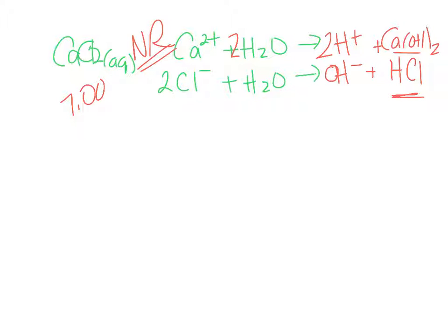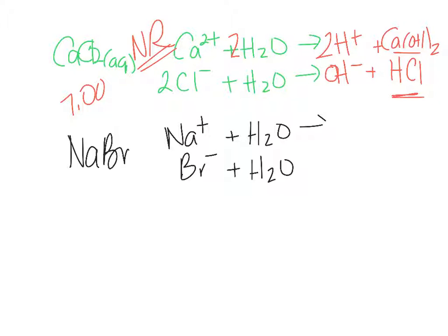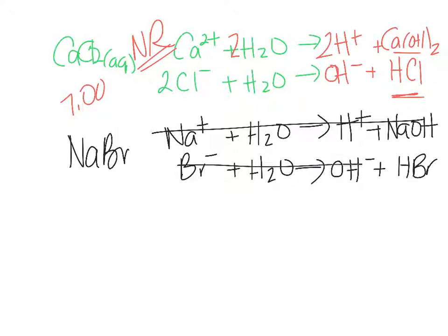What was the next one? NaBr. So NaBr makes Na+ and Br-. What would we make? We would have to make H+, which would mean we lose an OH. We're left with an OH-, so that would make NaOH. That would be OH-, that leaves an H to form HBr. Are either of these strong? NaOH, absolutely, that's strong, so this one doesn't happen. HBr is strong, so this one can't happen. So this has a final solution of pH 7.